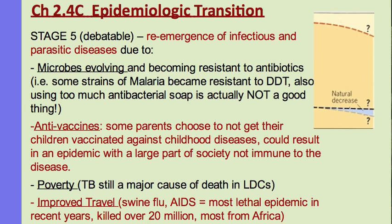Some strains of malaria became resistant to DDT, the pesticide used to kill malaria-carrying mosquitoes. As malaria adapted to DDT, spraying it no longer killed them. Additionally, overuse of antibacterial soap is a concern — it enters our water system, causing microbes to evolve and become resistant to antibacterial agents, so the soap no longer effectively combats bacteria on our skin.